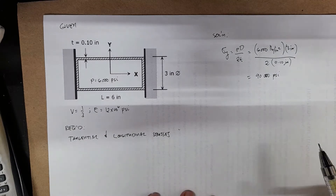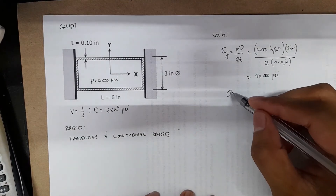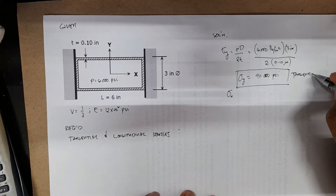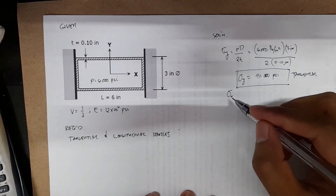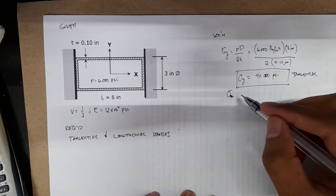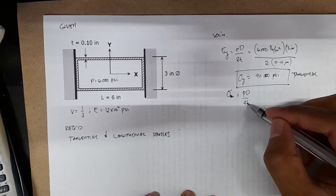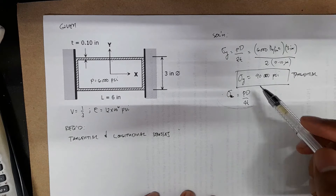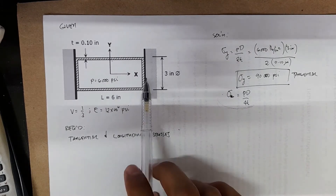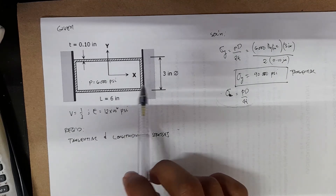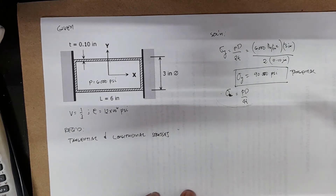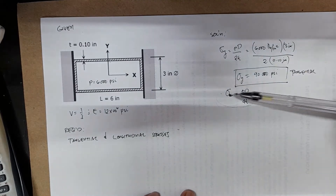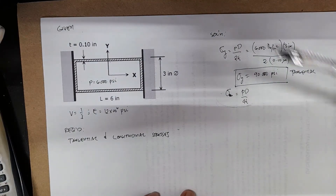We cannot make use of Pd over 4t for the longitudinal stress x. Even though we are given the internal pressure, we cannot use that equation because we have a specification that the strain in the x direction equals 0, due to the presence of the rigid walls. So we cannot make use of that standard equation.